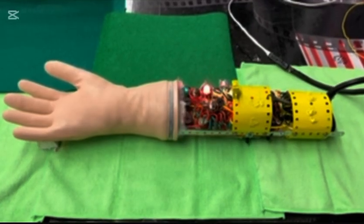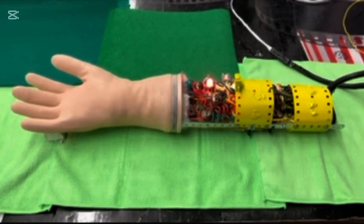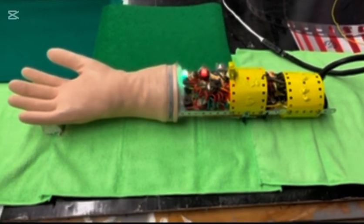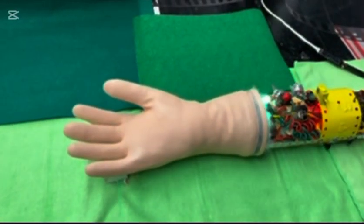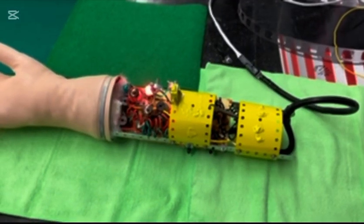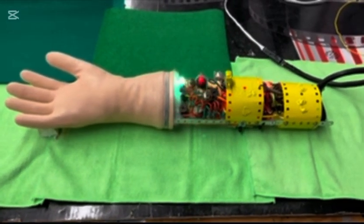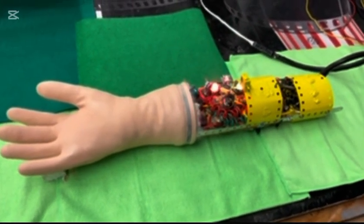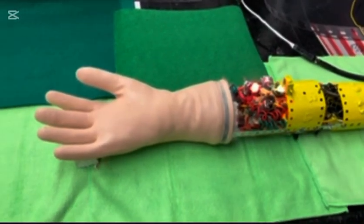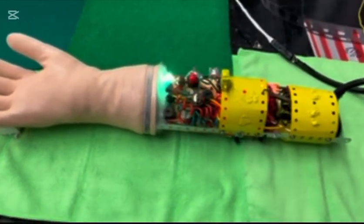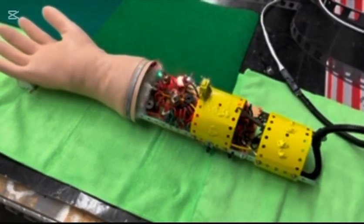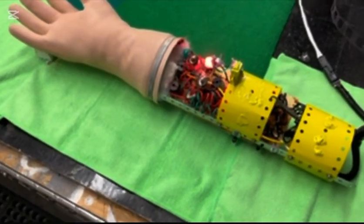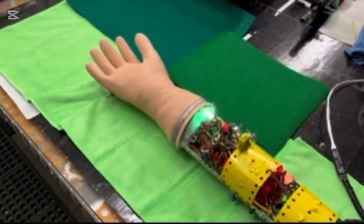Gentlemen, we can rebuild him. We have the technology. Better, stronger, faster. If you remember that opening remark by Oscar Goldman, you're of a certain vintage and you'll know what this is. It's Steve Austin's bionic arm. This bionic arm I made in 1978 at my elementary school science fair, in the heyday of the bionic man, the Six Million Dollar Man.